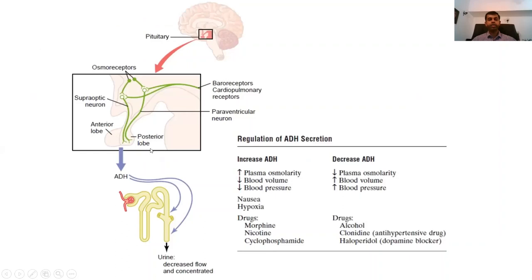Antidiuretic hormone is secreted from the hypothalamo-pituitary axis, released from the posterior lobe of the pituitary gland, and is stimulated mainly by plasma osmolality. If osmolality increases, the body tries to preserve more water from the kidney and ADH increases. ADH also increases with low blood volume and hypotension — many things stimulate ADH secretion.